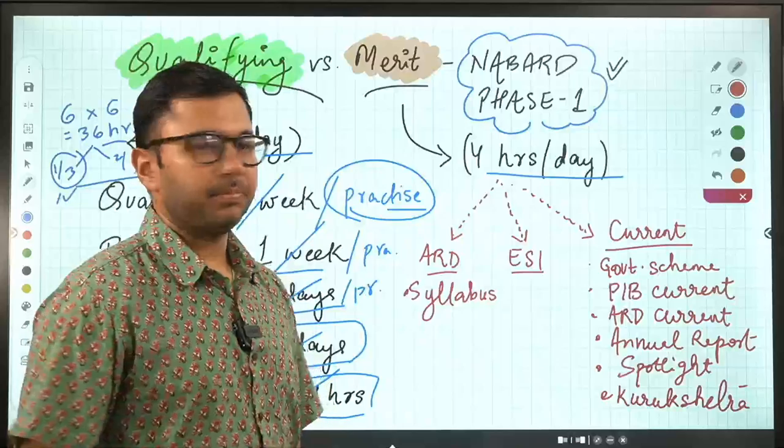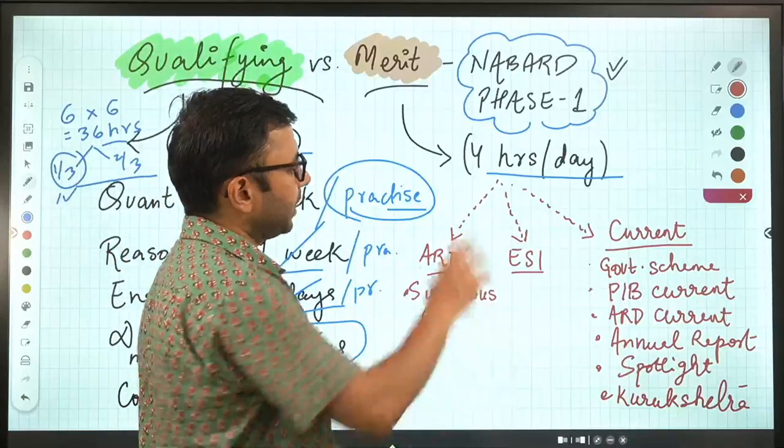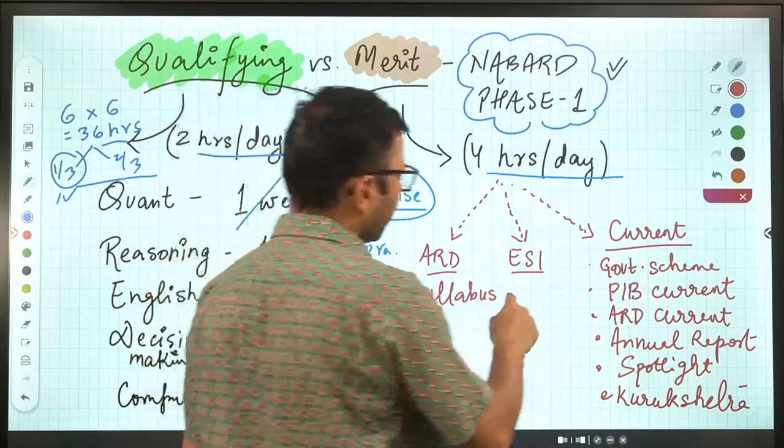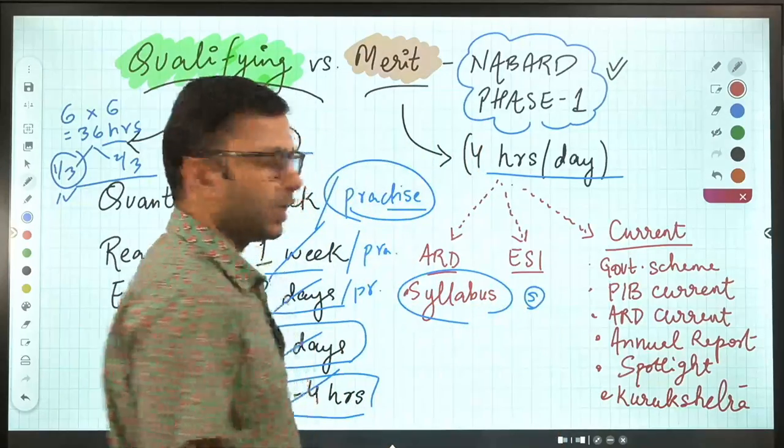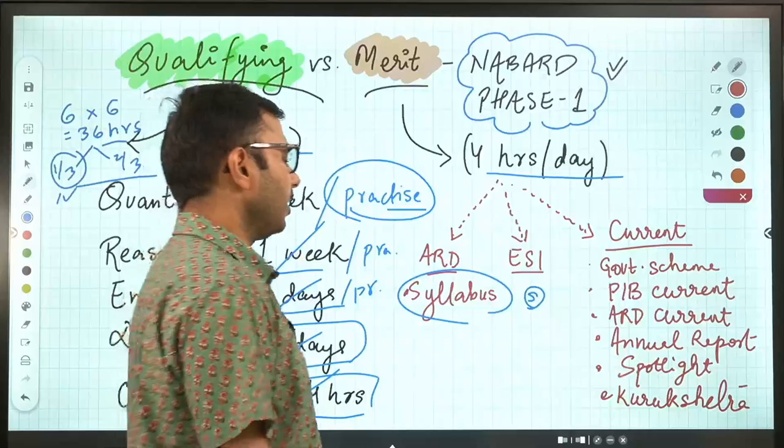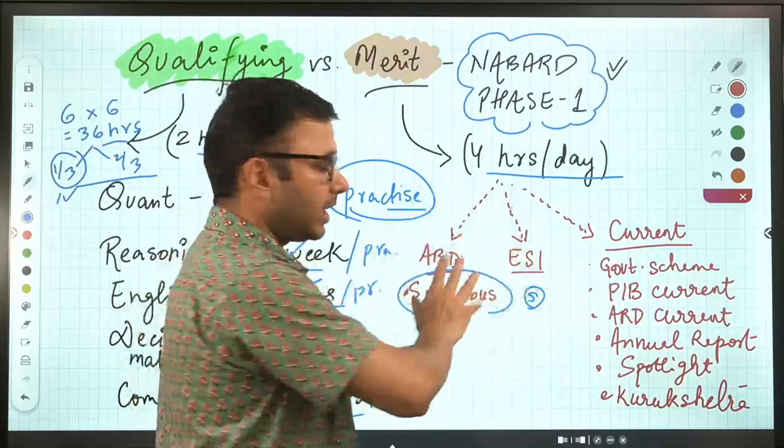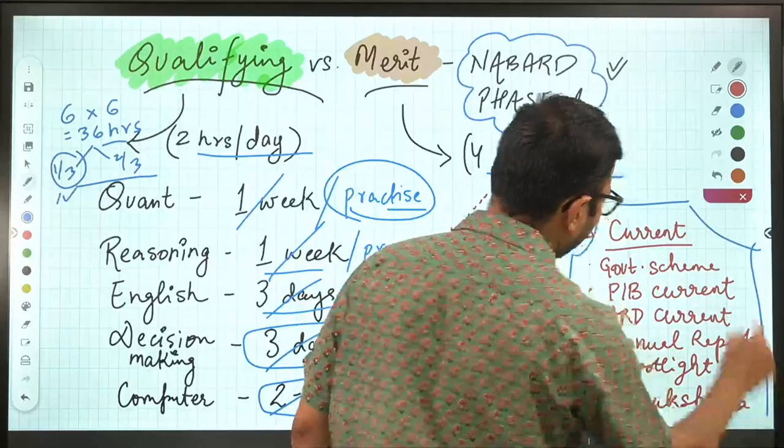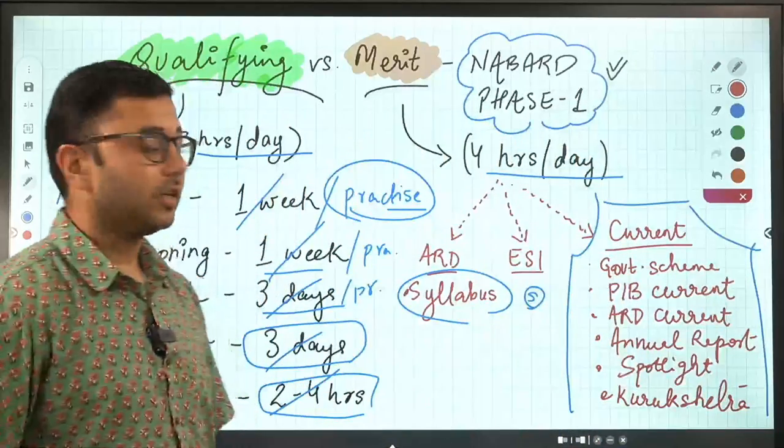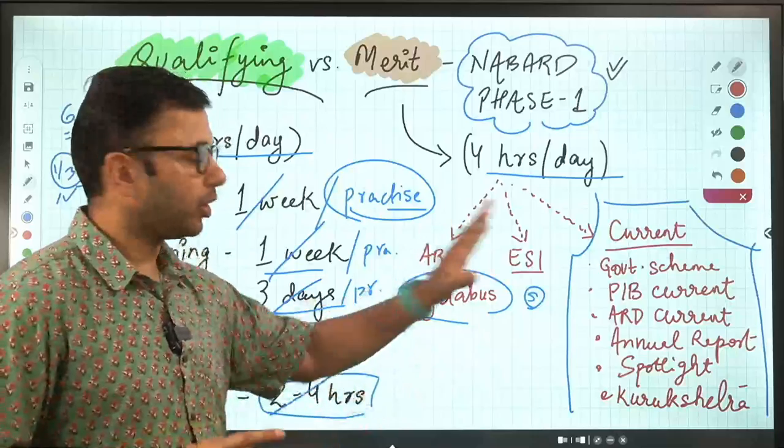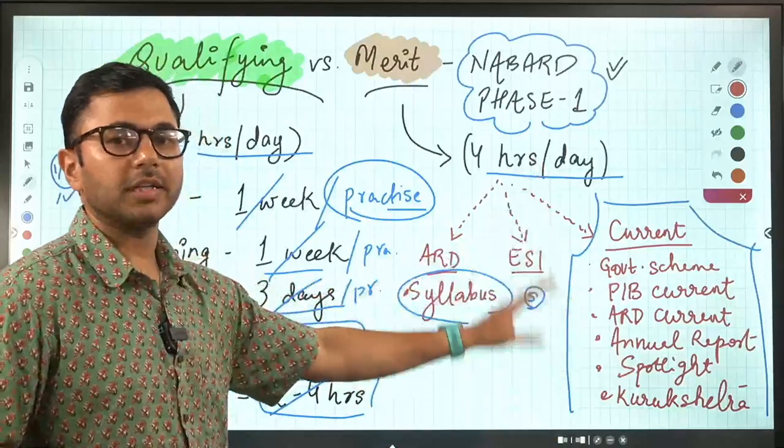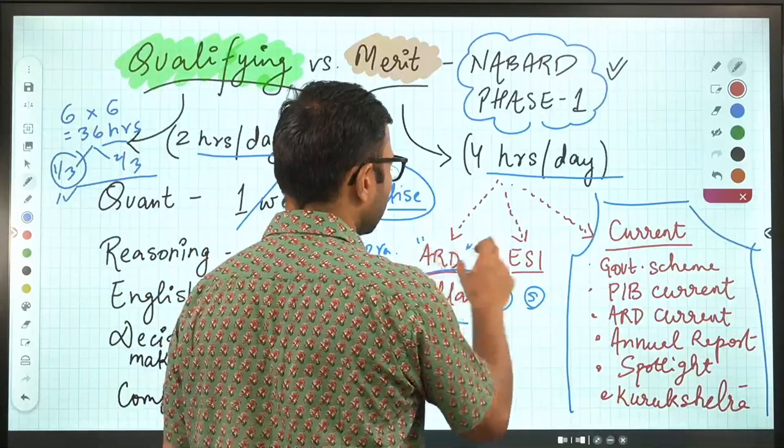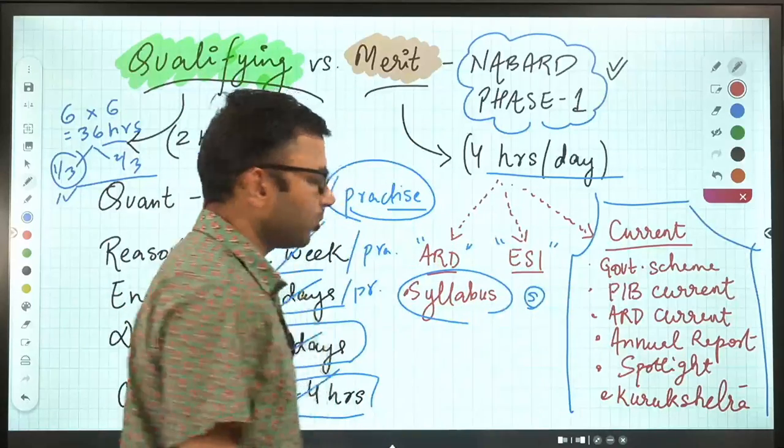Let's come to the merit part of phase one. You're spending about four hours per day. What all are the things that we have to do? Number one, you have to do syllabus of ARD and ESI. Forget about the current affairs of ARD and ESI here. I have mixed the entire current affairs, combined the entire current affairs together here, so that it becomes a lot more easy for you to remember how to cover it and be able to cover it. So when it comes to ARD and ESI, your first objective is going to be to cover the syllabus.